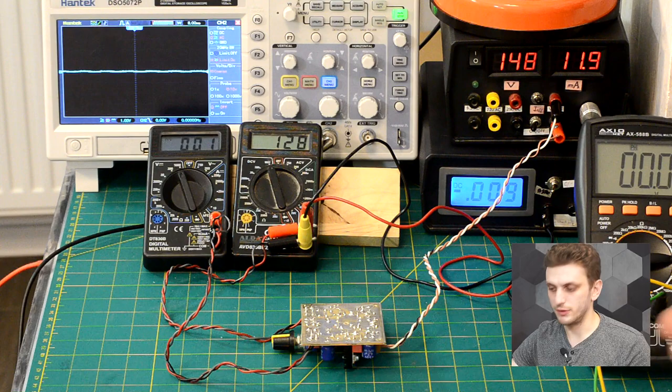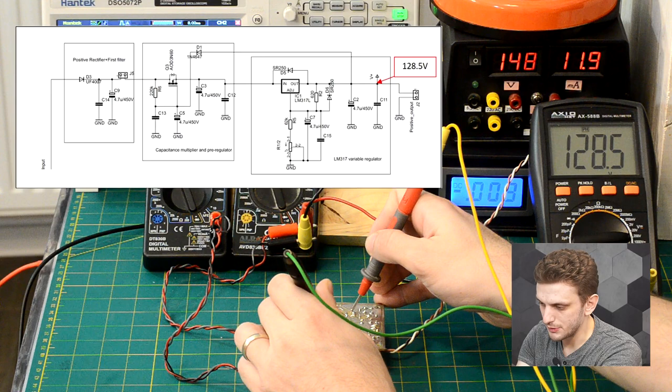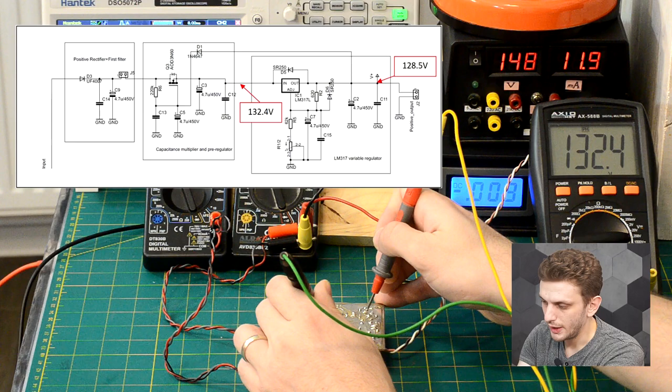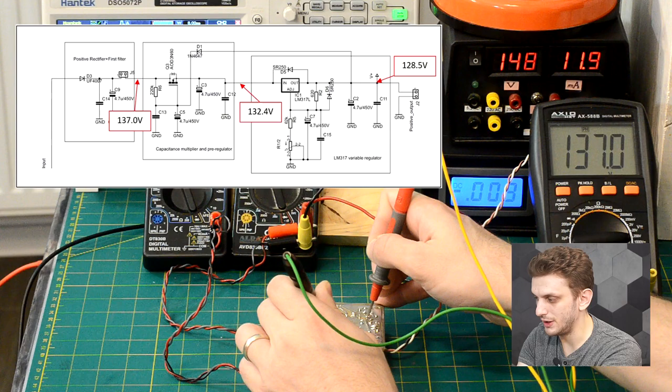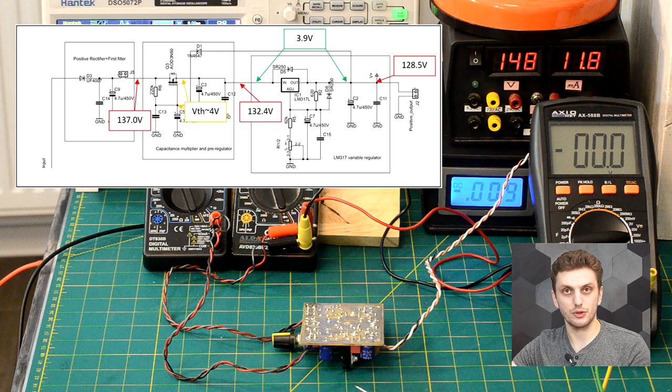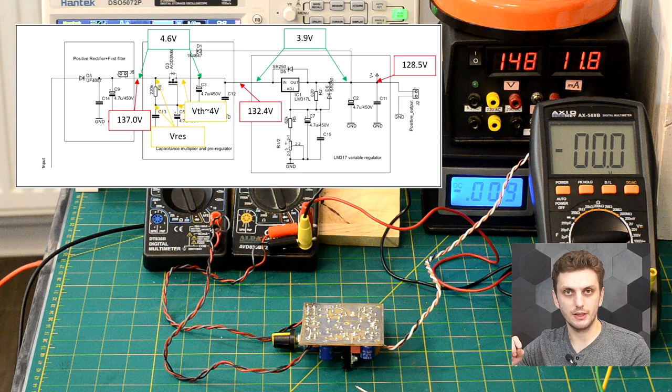Let's see what are the voltage drops on the circuit. First of all, let's have a precise measurement of the output: we have 128.5. Before the LM circuit we have 132.4, and right at the beginning after the first diode we have 137. These voltages are caused by, on one side, the minimum voltage needed for the LM to function correctly, which is about 2-3 volts. For our capacitance multiplier, we have the voltage needed to drive the transistor, the gate source threshold voltage, but also the voltage drop on the resistor between the gate and the drain through which a certain current is passing.